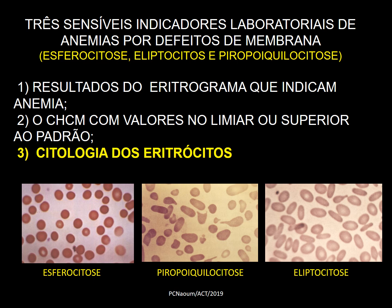Na piropoiquilocitose, há diversidade de células, geralmente hipercrômicas, mas a maioria esquizocíticas, com alguns lacriócitos. Na eliptocitose, não há nenhuma dúvida na forma elíptica, geralmente hipercrômica, das células.